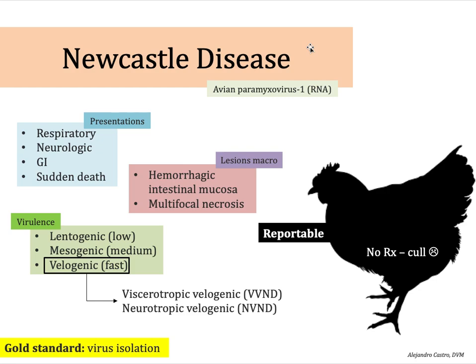This infectious disease is an avian paramyxovirus type one that has different clinical presentations. The most common one is acute respiratory disease, and in some other cases you can see neurologic or gastrointestinal signs. The clinical presentation depends on the host susceptibility and also on the virulence group.